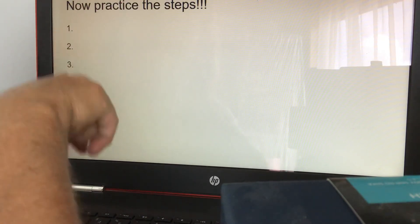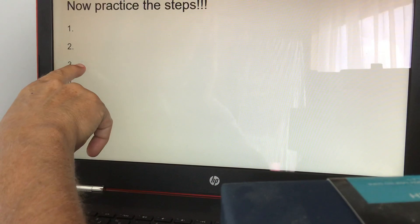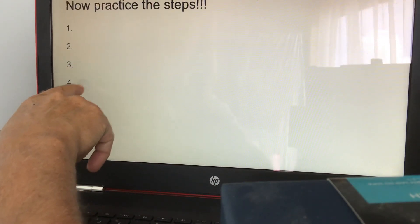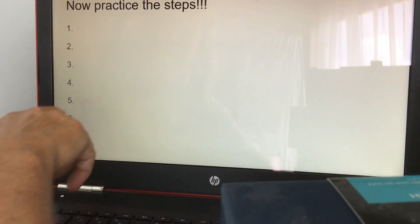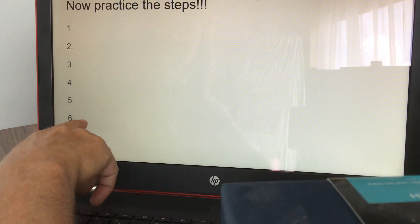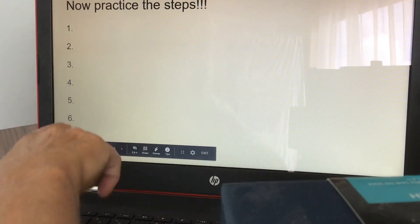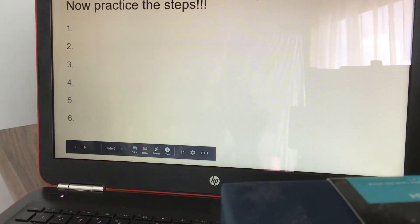Oh, and you can practice too. So one is state the problem. Two is gather the information. Three is form a hypothesis. Four is perform an experiment. Five is analyze the data. And six is to display your results. So practice on your own.